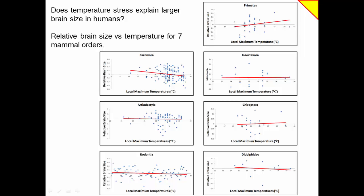Some groups showed a negative slope, so higher temperature did not lead to larger brains there. Others showed a positive slope. But this data, without taking relatedness of species into account, is only suggestive. After the student applied independent contrasts using a computer program, none of the other groups had a statistically significant relationship between temperature and brain size — except for primates. Primates had a statistically significant relationship where hotter temperatures corresponded to larger brains, which supports a model where human brains are so large because we evolved in a hot place.